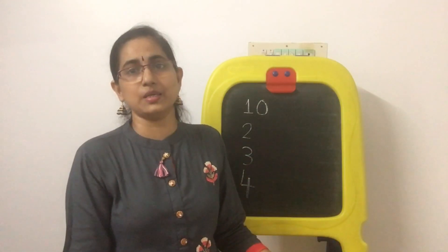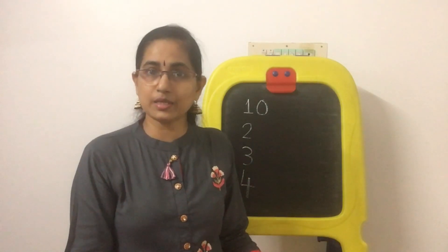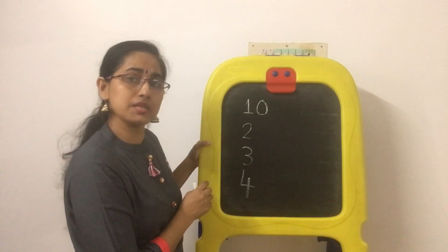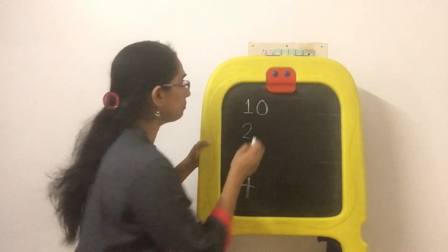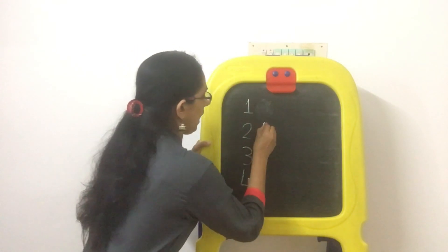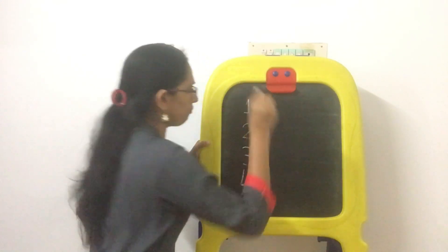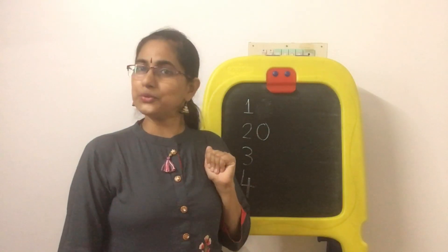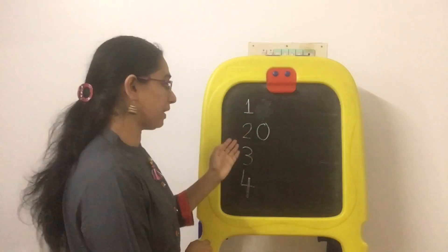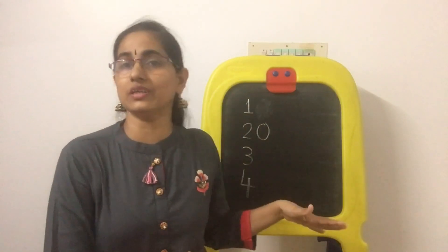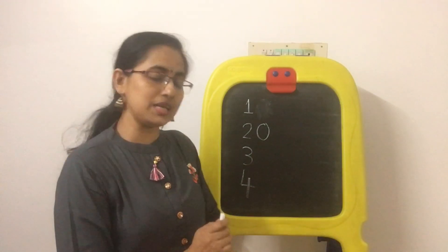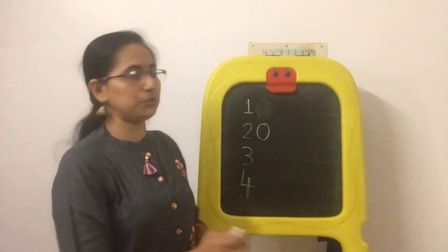Then number two said, 'Zero, why don't you come and stand along with me?' Zero came and stood along with number two. Now what is the value? Yes, two becomes twenty! Zero has a value — yes, it has a value!